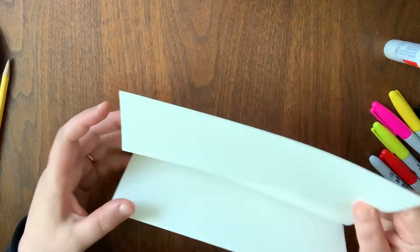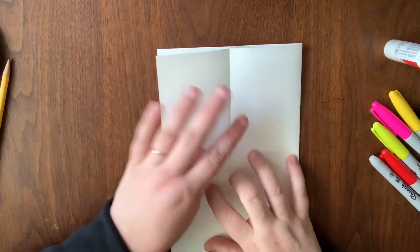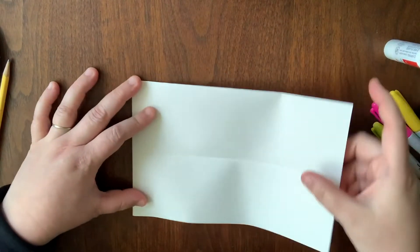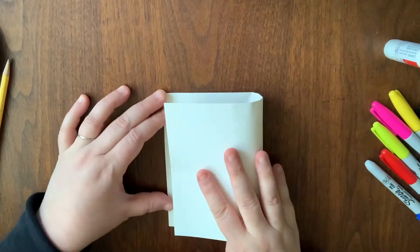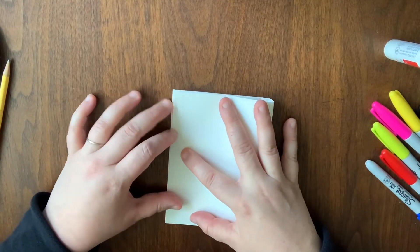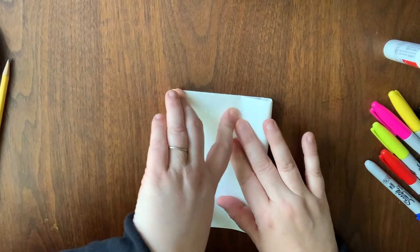Now you can open this back up, fold it in half like a card again, and then fold it in half this way. What we're doing is putting the creases into the paper.